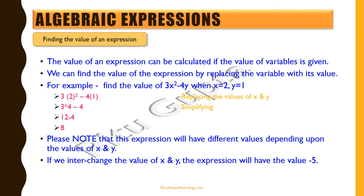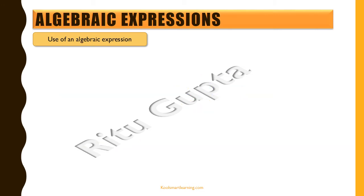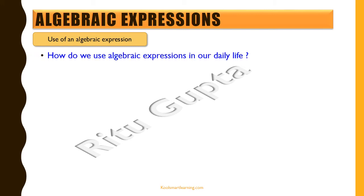If we interchange the values — say x equals 1 and y equals 2 — and substitute into the expression, it becomes 3×1² minus 4×2, which is 3 minus 8, giving a value of minus 5. Now let's try to understand where algebraic expressions are used — we use them very much in our daily lives.